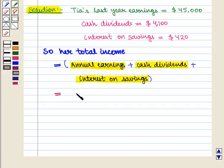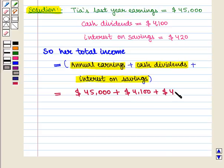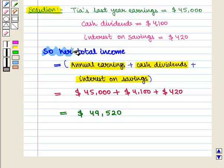This is equal to $45,000 plus $4,100 plus $420, which equals $49,520. So her total income is $49,520.